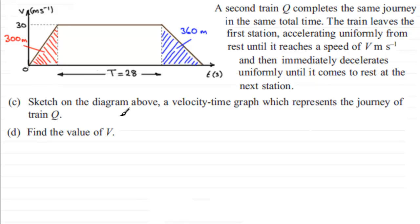So what's going to happen is that for Q, it's going to start at rest here, accelerates uniformly, so it's going to be a straight line going upwards, and then immediately decelerates back to the point here where it's become stationary again.